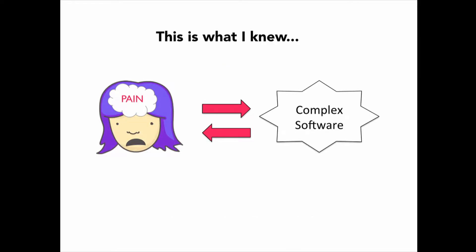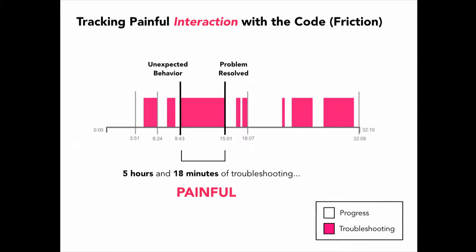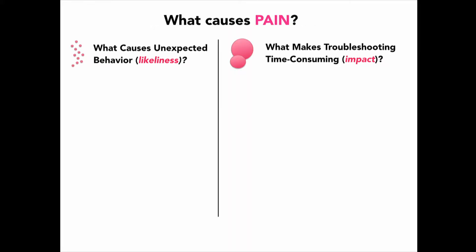When I had to work with complex code, it was really painful. But what made development actually feel painful? I started keeping track of my painful interactions with the code and visualizing them on a timeline. The pain started when I ran into some unexpected behavior and ended when the problem was resolved. This one was 5 hours and 18 minutes of troubleshooting. The amount of pain was caused by two different factors: the likelihood of unexpected behavior, and the cost to troubleshoot and repair the problems.